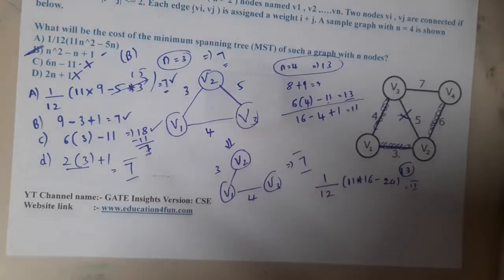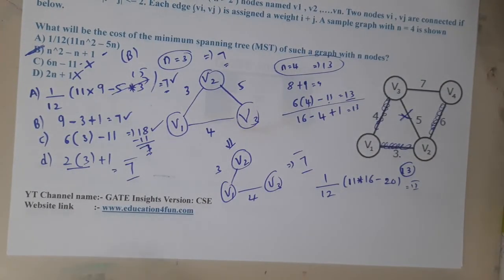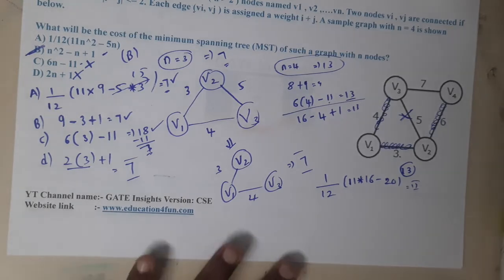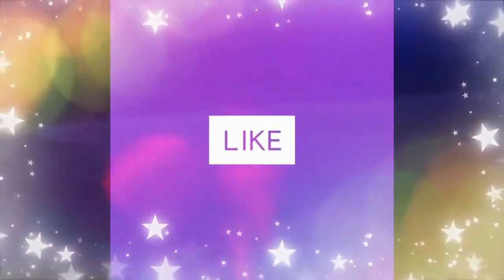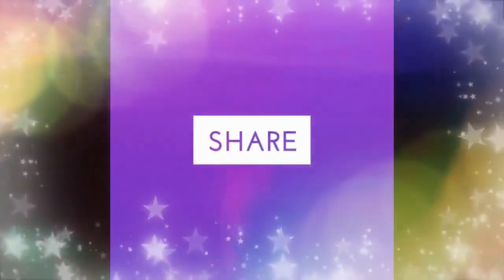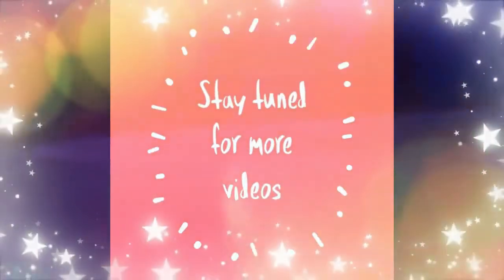So the equation for the minimum spanning tree cost is n² - n + 1 for this particular question. It's quite an easy question once you use substitution. I hope everyone got some basic idea on this. In the next lecture we will continue with the next question. Thank you, thanks for watching — like, share and subscribe for more videos.